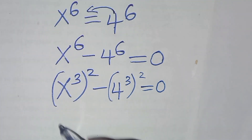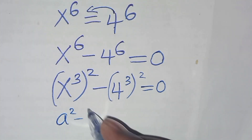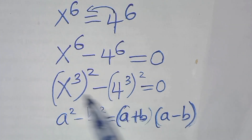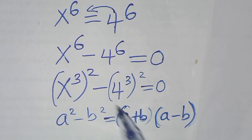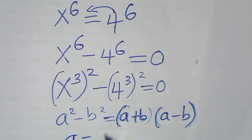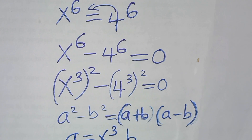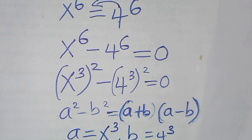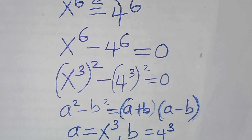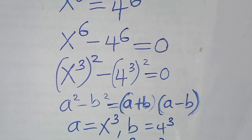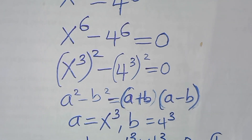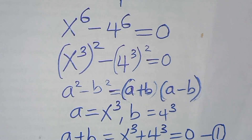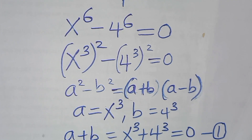This is in the form of a squared minus b squared, which can be expressed as (a + b)(a - b). Here, a equals x to the power 3 and b equals 4 to the power 3. Substituting, we get (x³ + 4³) = 0 — call this equation 1 — and (x³ − 4³) = 0.